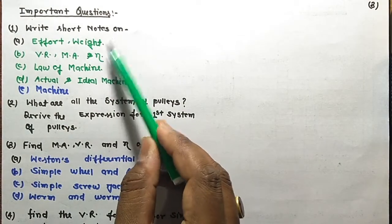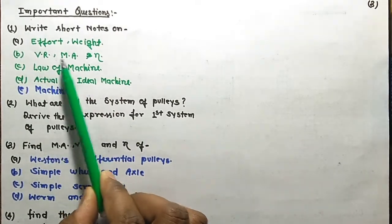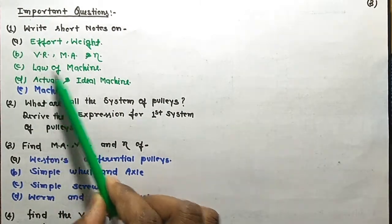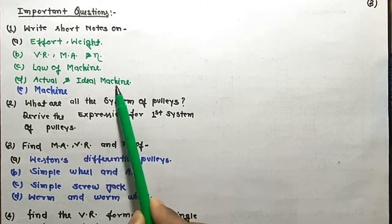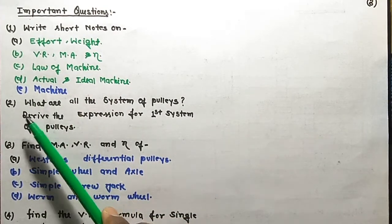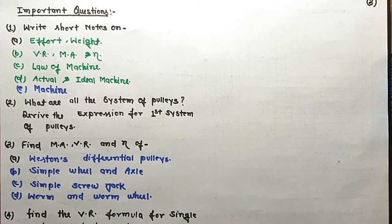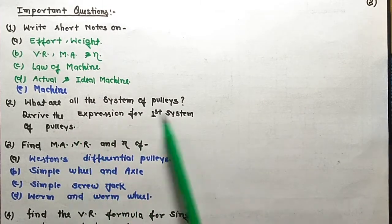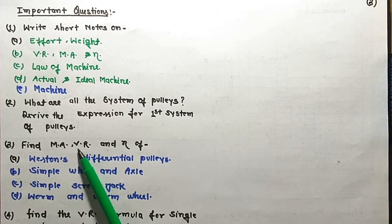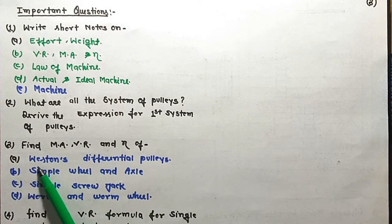To summarize this chapter: we covered mechanical advantage, velocity ratio, efficiency, law of machine, actual and ideal machine. The important questions for this chapter include: question A — mechanical advantage, efficiency; question B — velocity ratio; question C — law of machine; question D — actual and ideal machine. Question two asks about all systems of pulleys. These are the important topics from this chapter.